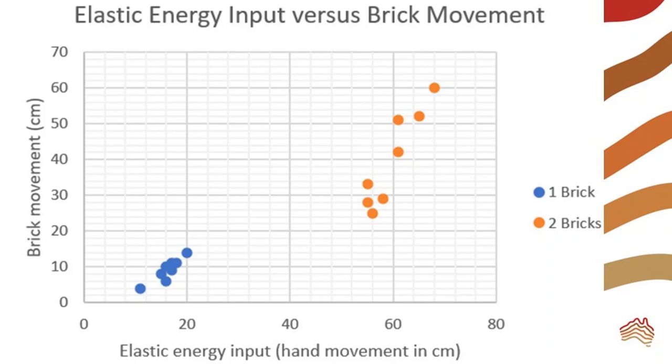Here is a graph of the data. The energy input from hand movement appears to be proportional to the output of brick movement based on this linear graph. However, the data from two bricks shows much more variability than one brick.